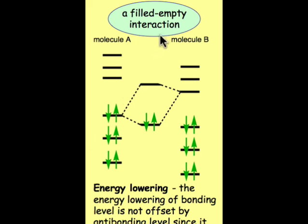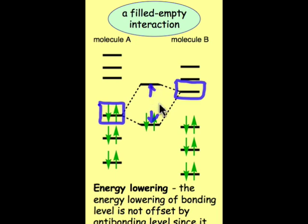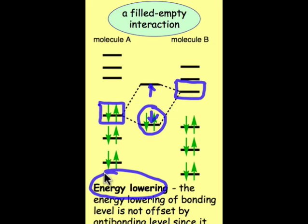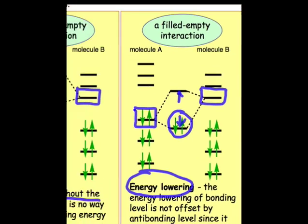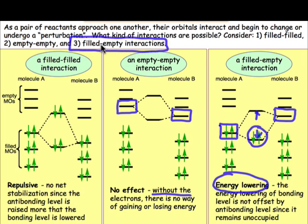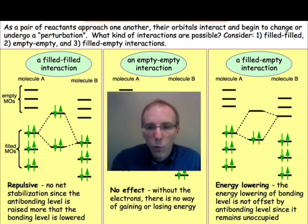What about the filled-empty case? In the filled-empty case, we'll be taking one of the occupied orbitals on molecule A and interacting it with an empty orbital on molecule B. Two new molecular orbitals will result: one of them will be stabilizing, and one will be destabilizing. Since only a pair of electrons is available from this partner, we have a net stabilizing effect. The net result is an energy-lowering. It's for this reason that frontier molecular orbital theory focuses its attention on filled-empty orbital interactions. In the next webcast, we'll take a closer look at which of the possible filled-empty orbital interactions is most important.